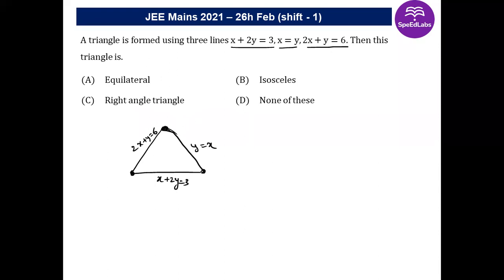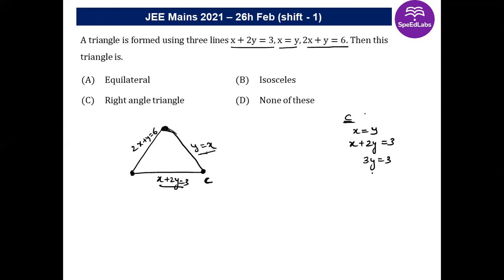With three equations of straight lines we can find the vertices easily by solving pairs of lines. For vertex C, solve y = x and x + 2y = 3. Substituting x = y gives 3y = 3, so y = 1 and x = 1. Therefore vertex C is (1, 1).